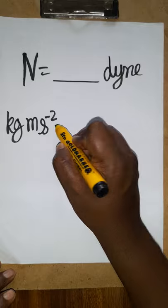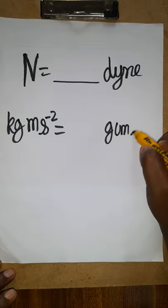I am going to convert into the dyne. Dyne we can call as gram centimeter second minus 2.